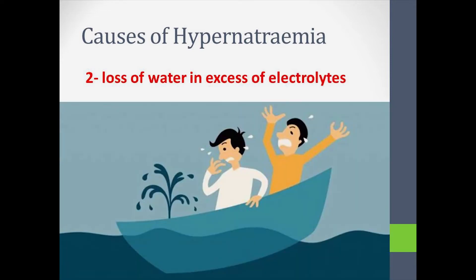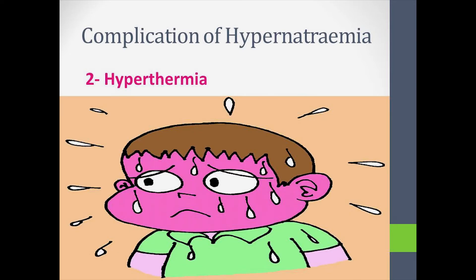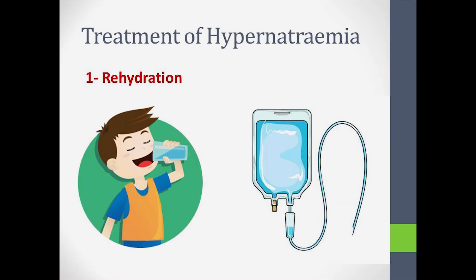The complications of hypernatremia: first is delirium, second is hyperthermia, and third is renal failure. In the treatment of hypernatremia, it's rehydration — either by drinking water or by IV administration.